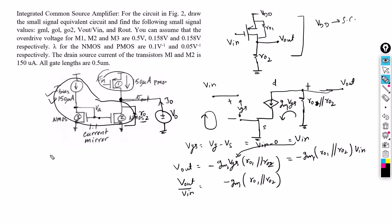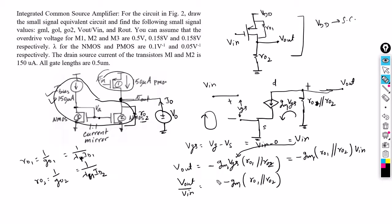Gm1 is the transconductance of the first transistor. RO1 = 1/G01 = 1/(λP · ID1) and RO2 = 1/G02 = 1/(λN · ID2). Substituting all values, the voltage gain Vout/Vin evaluates to −26.67 V/V.